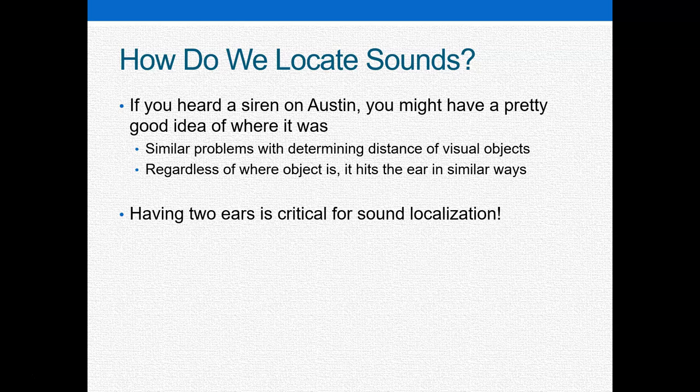Generally, if you've heard a siren, like an ambulance siren or a police car siren, and if we were still on campus at Cottey and you heard it down Austin, you'd probably have a pretty good idea of where it was coming from. That's partially because of localization of sound, and also to a lesser extent, the Doppler effect. One of the things that is interesting is that a lot of the issues we have with locating sounds, we also have with locating distance and depth related to visual objects. We have issues related to correspondence and the overlap of auditory information. One of the things that makes sound localization kind of tricky is that regardless of where the object is in the environment, it's going to hit the ear the exact same way.